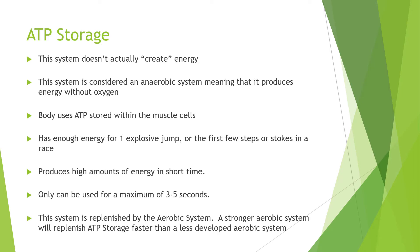ATP storage — this system doesn't actually create energy. It's just a storage system within the muscles. It's considered an anaerobic system, so it produces energy without oxygen. The body uses ATP that is stored within the muscle cells themselves. You have enough ATP for one explosive jump or the first few steps or strokes in a race. It produces a high amount of energy in a short period of time, but it can only be used for a maximum of three to five seconds.